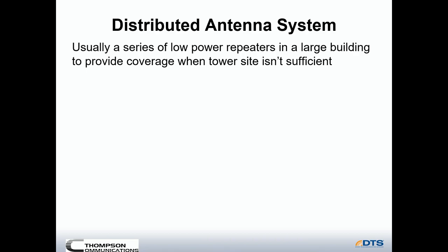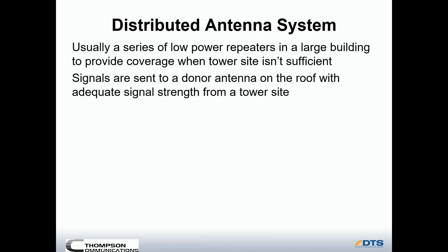A distributed antenna system, or DAS, is usually a series of low-power repeaters in a large building that provides coverage when the external site isn't sufficient. Signals are sent from the internal repeaters to a donor antenna on the roof which connects to the tower site.